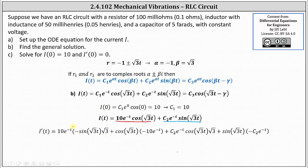When substituting zero for t, e^0 is one, cosine zero is one, and sine zero is zero. This simplifies nicely to just negative 10 plus c₂ times square root three equals zero. Therefore c₂ equals 10 divided by square root three. You may want to pause the video to verify that when substituting zero for t, we do get this equation.